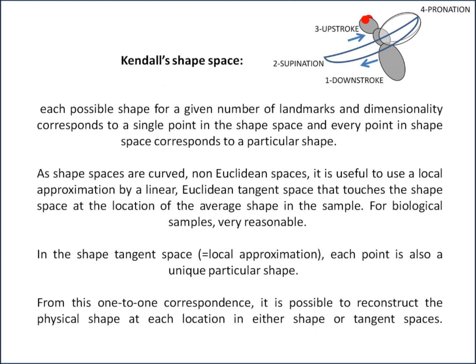What is Kendall's shape space? Each possible shape for a given number of landmarks and dimensionality corresponds to a single point in this shape space, and every point in the shape space corresponds to a particular shape. The simplest case is that of triangles with three dimensions, three sides, three landmarks. The Kendall shape space for a triangle is actually a sphere, so it's the only one you can visualize. For more landmarks, you can't really visualize it because you can't see more than 4D or at least 3D in this case.